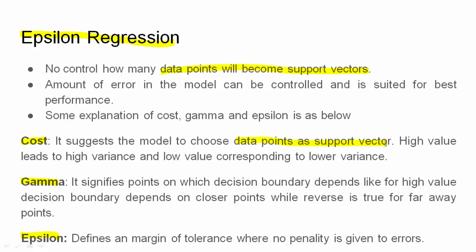But in epsilon, you can control the amount of error. Epsilon defines the margin of penalty or tolerance where no penalty is given to the error. The concept is regarding the control of error, but there is no control over support vectors. If you want to control the number of support vectors, you have to go for nu regression, which is based on the cost function.